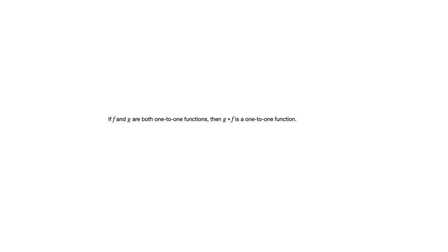A couple of theorems that are mentioned in this section. One is that if F and G are both one-to-one functions, then G circle F is a one-to-one function. And you can show that using the definition of one-to-one. In the textbook, they get into the proof of that. And the same thing can be said for onto functions. If F and G are both onto, then the composition is also an onto function.